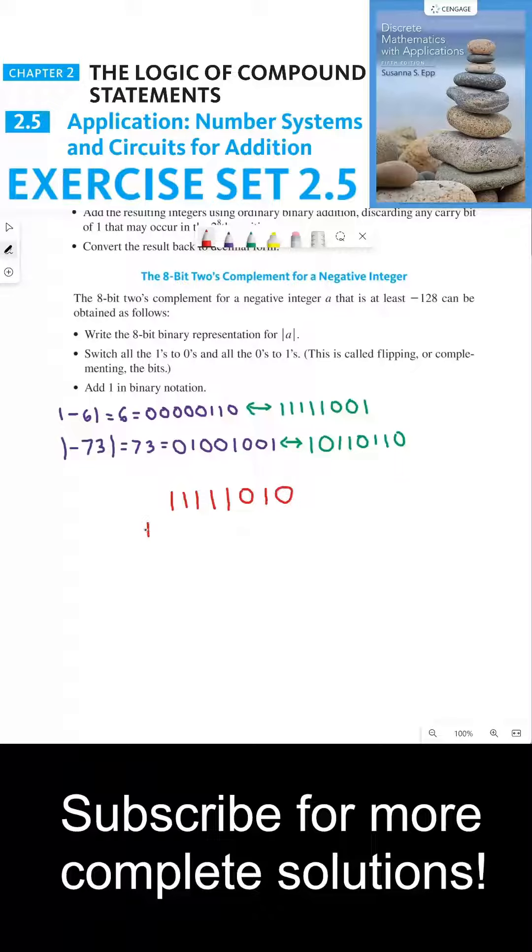We need to add that to the result when we add 1 to the second number, which is supposed to represent 73 in binary. So now we need to add 1 to 10110110, which would be 10110110.